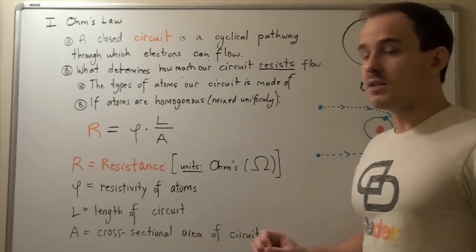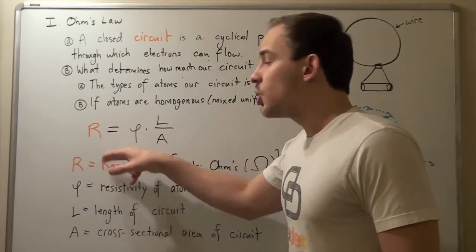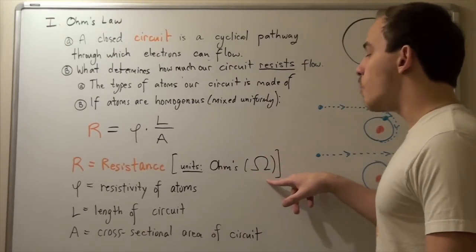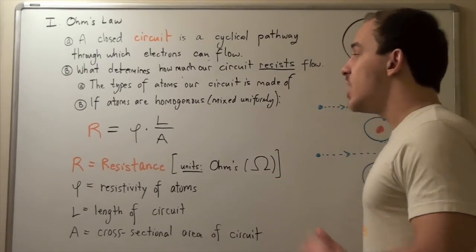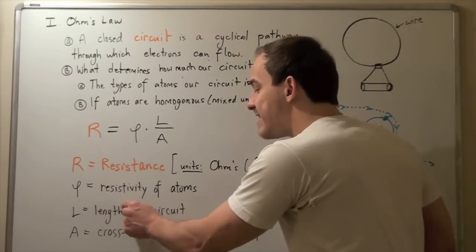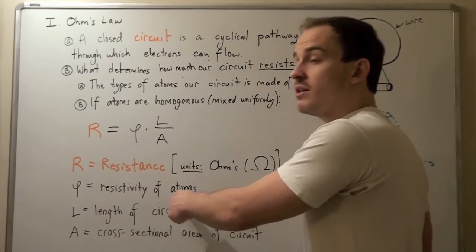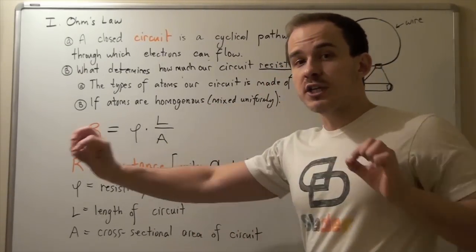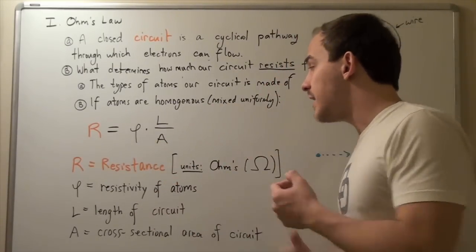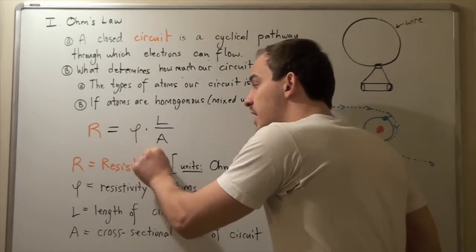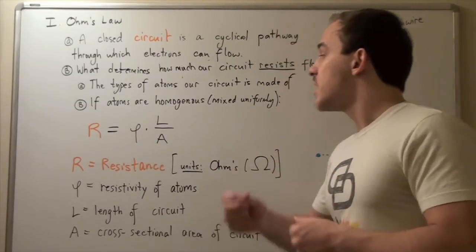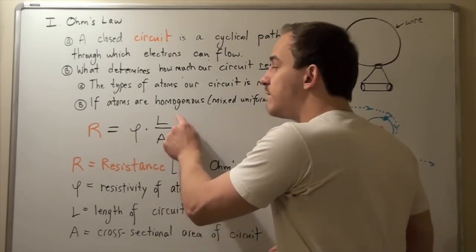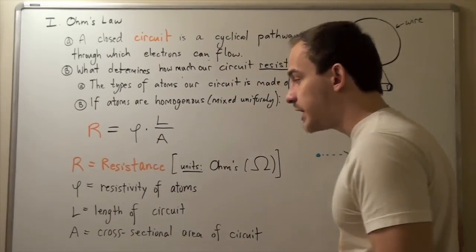To find the resistance, we have to use the following formula. Resistance R, which is given in units called ohms, represented by the Greek letter omega, is given by multiplying resistivity of atoms, given by the Greek letter rho, multiplied by the length of our wire, divided by the cross-sectional area of our wire. So let's examine every single factor and see how they affect our total resistance.